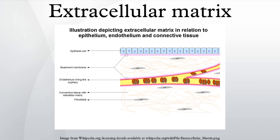Chondrocytes are found in cartilage and produce the cartilaginous matrix. Osteoblasts are responsible for bone formation. Plant cells are tessellated to form tissues. The cell wall is the relatively rigid structure surrounding the plant cell, providing lateral strength to resist osmotic turgor pressure, but flexible enough to allow cell growth when needed.